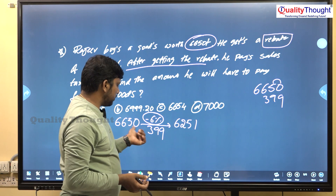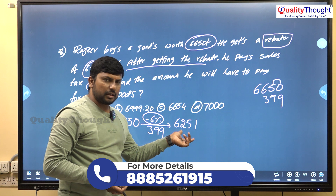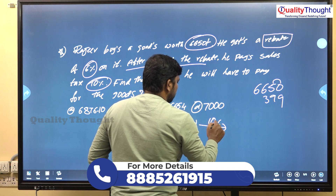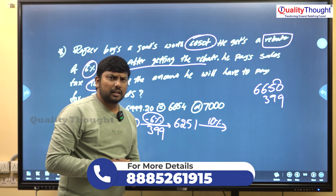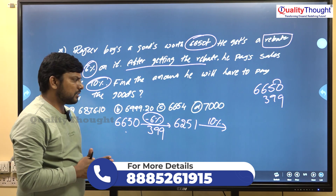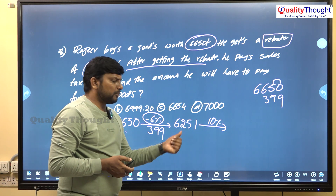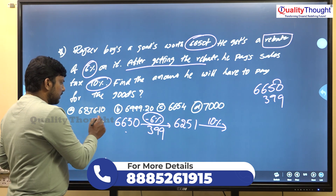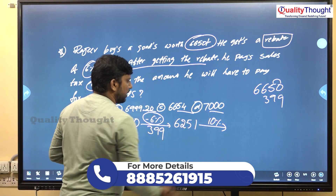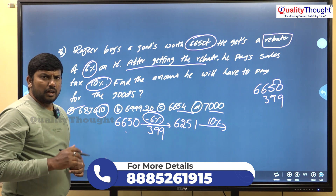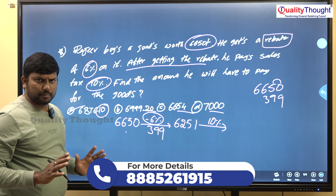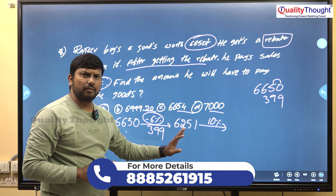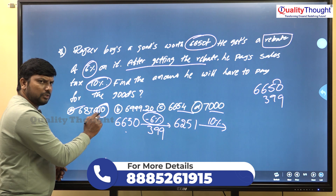Then adding 10% sales tax to 6,251: 10% of 6,251 is 625.10, so 6,251 plus 625.10 gives 6,876.10 rupees as the final answer.